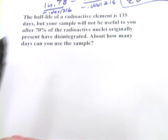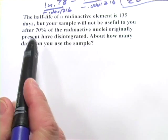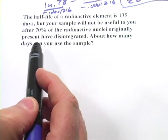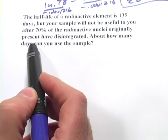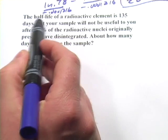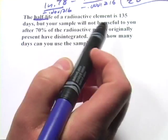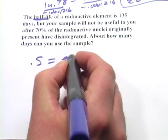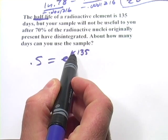All right. Let's look at another one. This one says the half-life of a radioactive element is 135 days. So in this case, t will be in days, not years. But that's not a problem. But your sample will not be useful to you after 70% of the nuclei originally present have disintegrated. All right. Well, let's figure out that constant of radioactive decay first. They're telling us the half-life is 135 days. So we simply set it up like this, plugging in 135 for t, and then we'll solve for k.